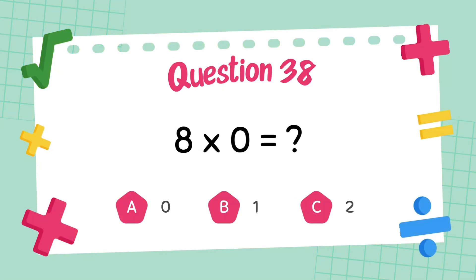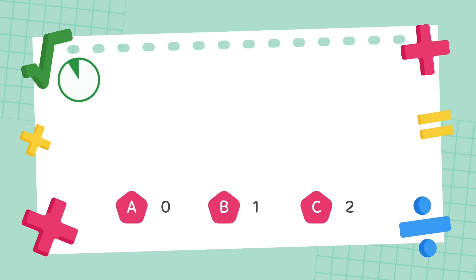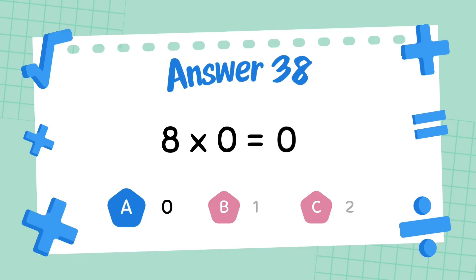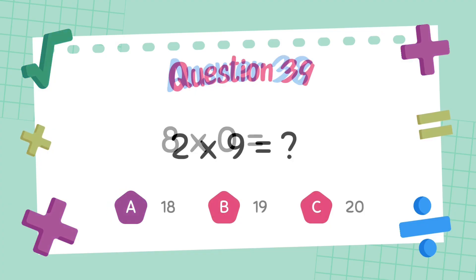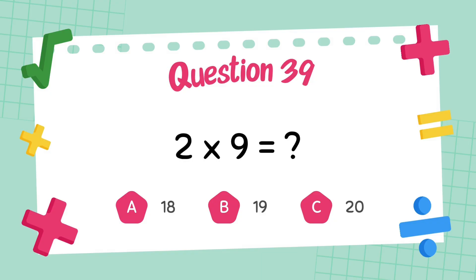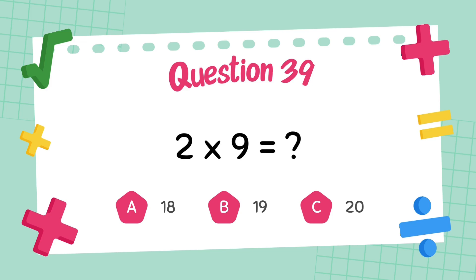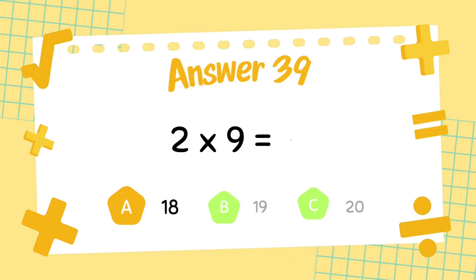What is 8 multiply 0? The answer is 0. What is 2 multiply 9? The answer is 18.